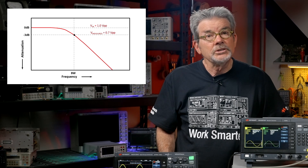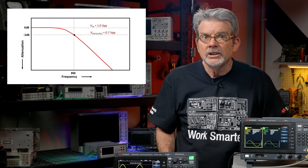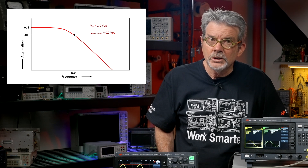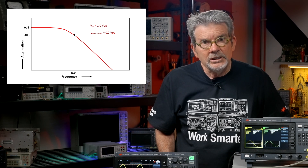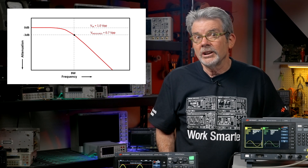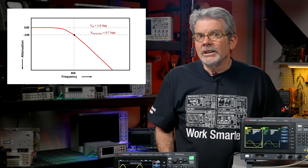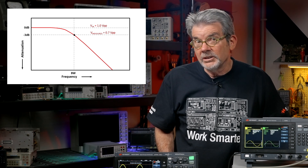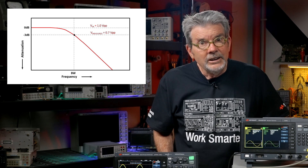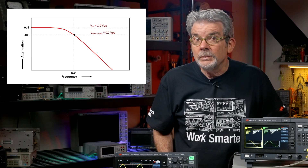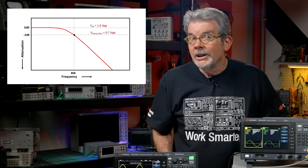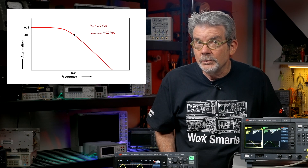The graphic on your screen now shows the typical frequency response of an oscilloscope. Attenuation, which is negative gain, is on the vertical axis and frequency is on the horizontal axis. Perhaps you remember this type of plot from our lesson on Bode plots. The ideal gain of an oscilloscope is 0 dB, or an absolute gain of 1. If you input a 1 volt peak-to-peak signal, you want the scope to capture and measure 1 volt peak-to-peak, regardless of the frequency of the input signal.